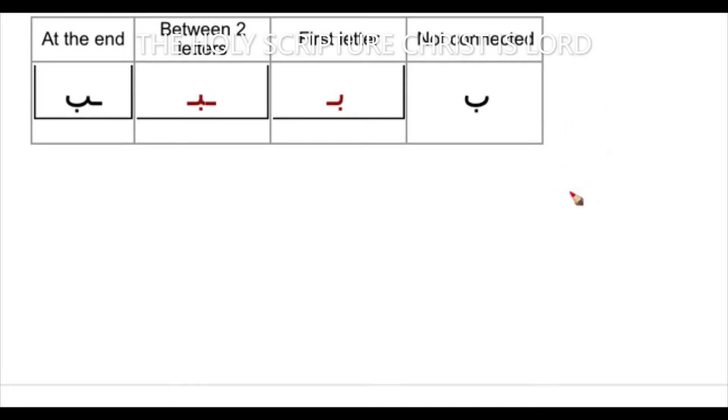So BA, this is BA by itself. Remember, this is BA in the middle and this is BA at the end, which means this line here is to connect, whatever the letter is going to be before it. It doesn't have to be long like this. I will show you as an example. I will write the word bait. Bait means house.